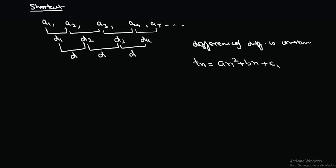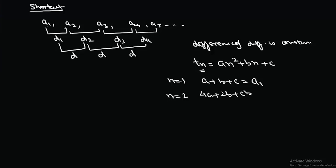To find a, b, and c we need three equations. Putting n = 1 gives a + b + c = t1 = a1. Putting n = 2 gives 4a + 2b + c = t2 = a2. Putting n = 3 gives 9a + 3b + c = a3. So we have three equations and three unknowns to find a, b, and c.